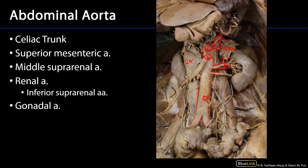Here's an accessory renal artery. And then we have gonadal arteries — there's one gonadal artery and then there's the other. If it supplies a testis with blood they may call it the testicular artery. If it supplies an ovary with blood it may be called the ovarian artery, or you may continue to call it the gonadal artery.